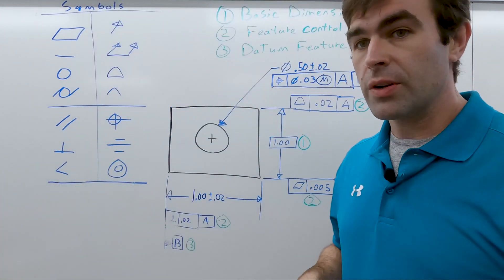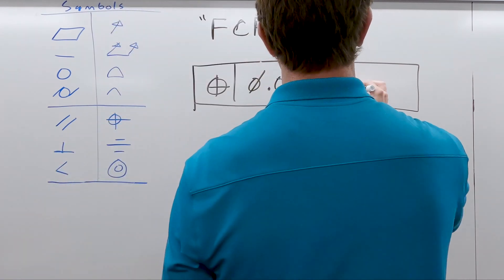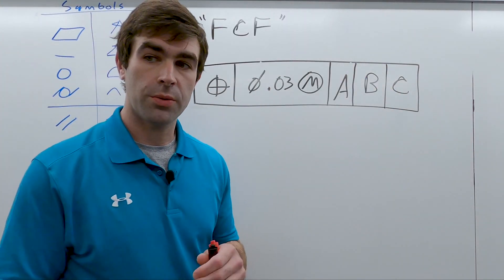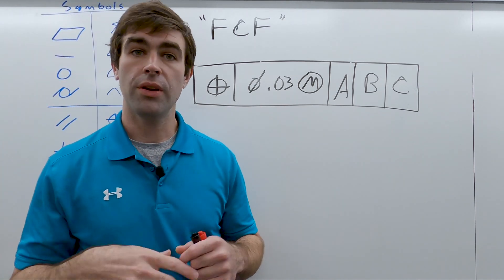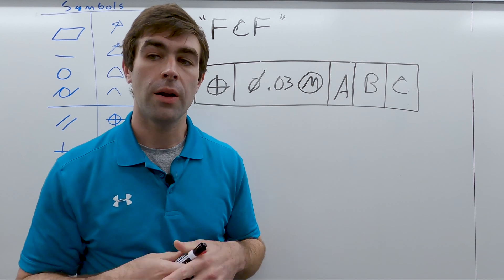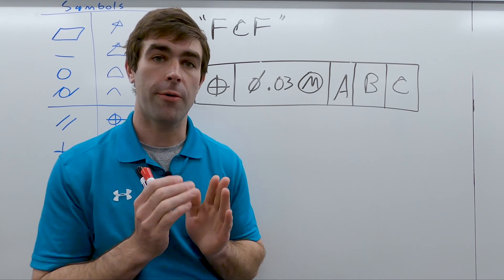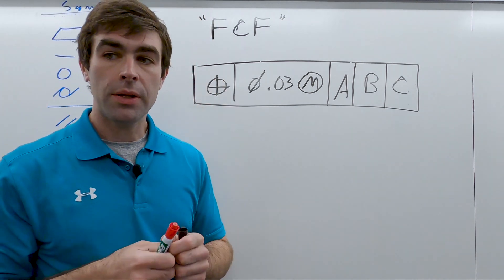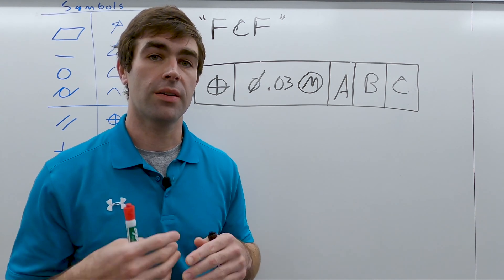Inside the feature control frame—so a feature control frame is going to look something like this. This is a rather complicated one; sometimes they're much simpler. But this is going to allow us to talk about what each of the compartments is.